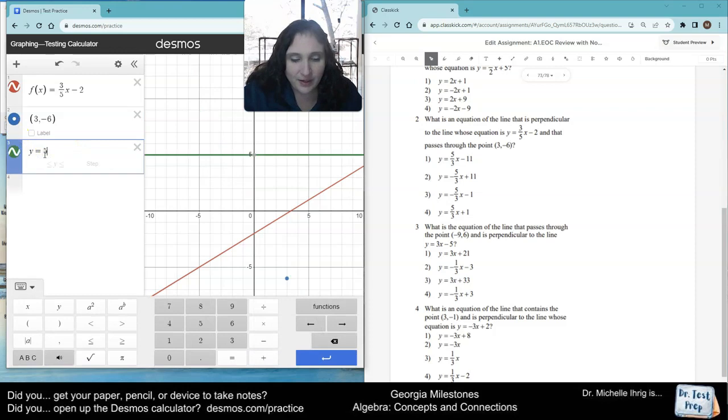Choice number one is five-thirds x minus 11. Not perpendicular, not the correct answer. So, I already know I could do five-thirds x plus one. Choice four. Not perpendicular, not the correct answer. So, I know it's got to be negative five-thirds.